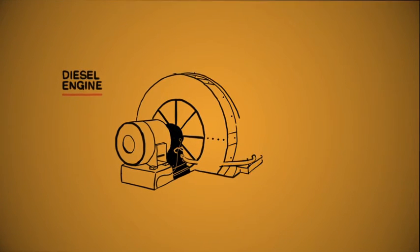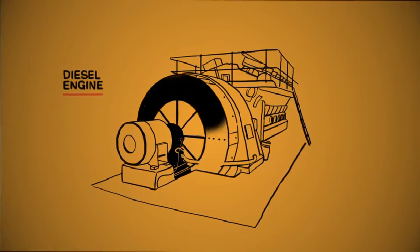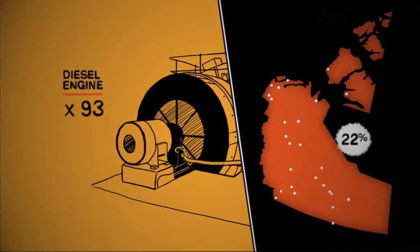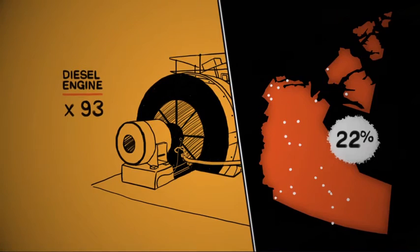Diesel and natural gas generators are like huge car engines, and NTPC has 93 of them providing power to 26 different communities. These generators produce 22% of the power in the territory.